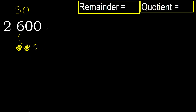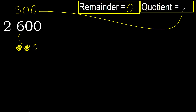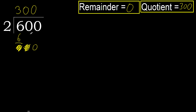That is not numbered, therefore finish it — therefore complete. Complete with 0 because here we finish it with this number. 600 divided by 2 is 300.